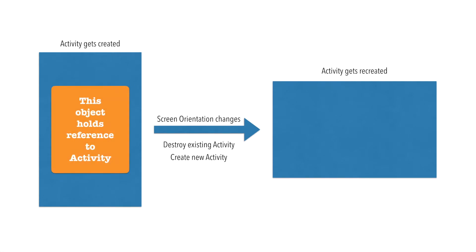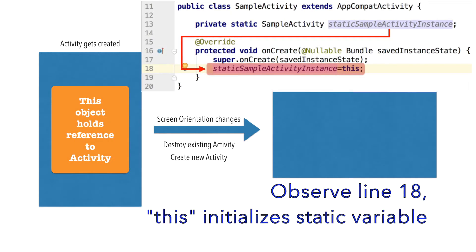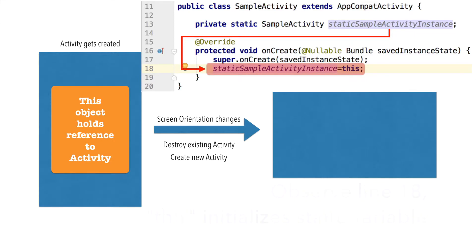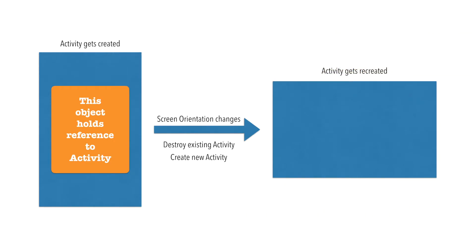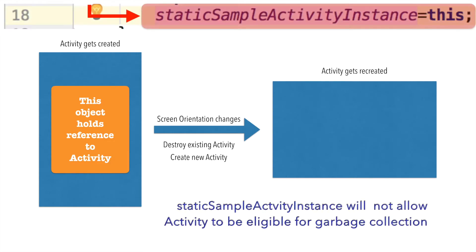Now I will create an object in the activity. This is a static object that holds the reference to the activity. As the screen orientation changes, Android will try to destroy that particular activity and recreate a new activity, but it can't do so because this static object holds the reference to the activity.